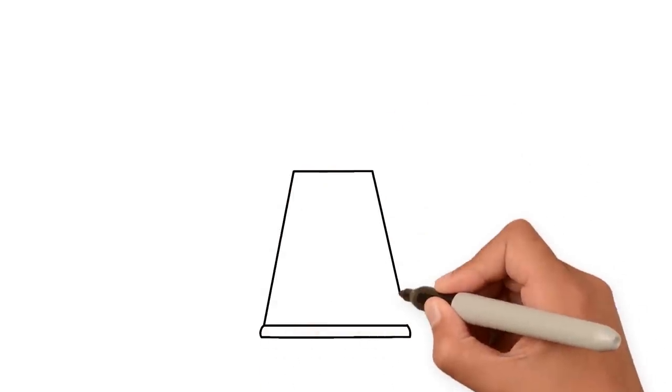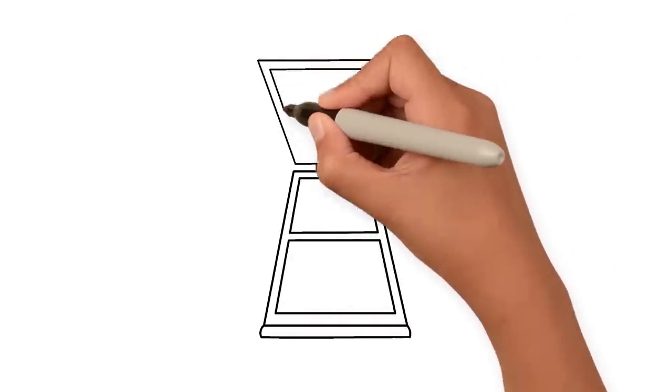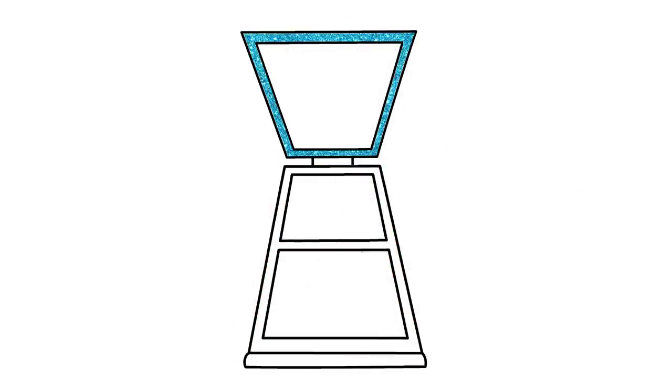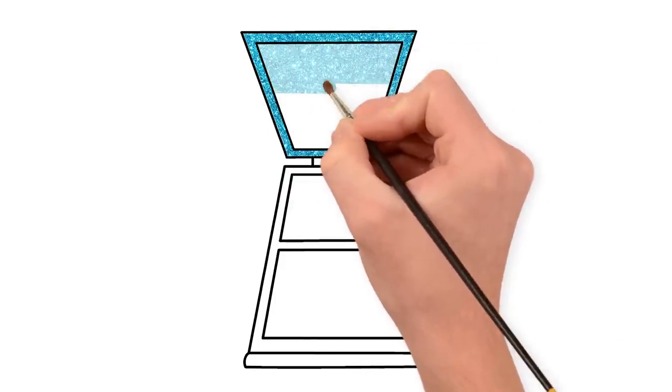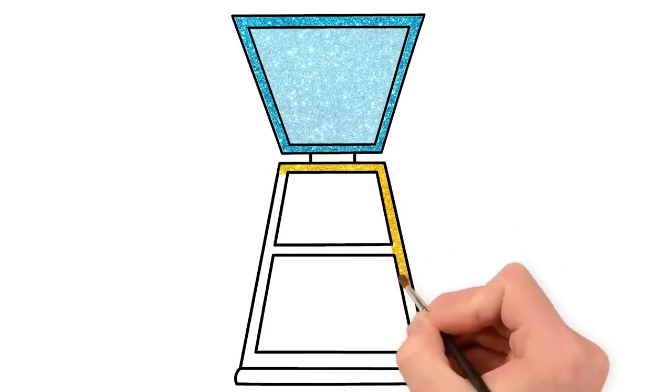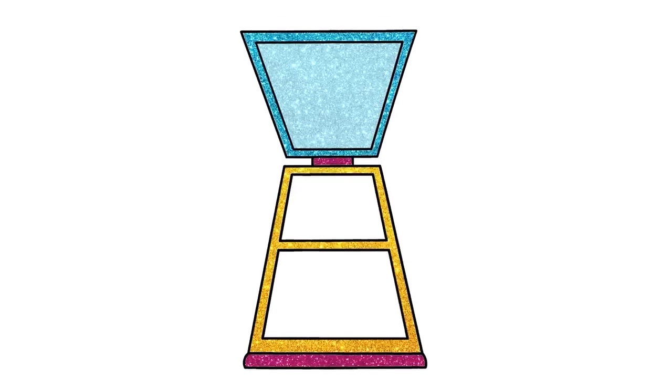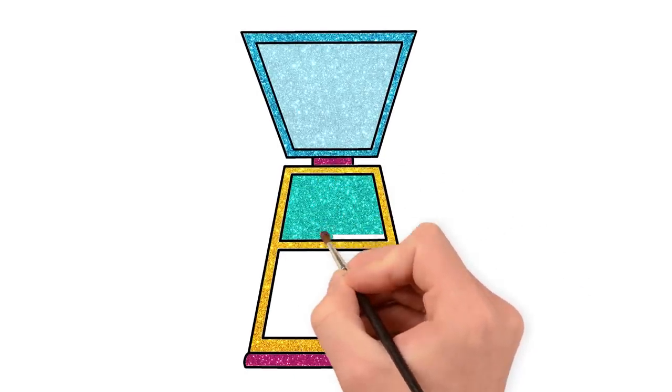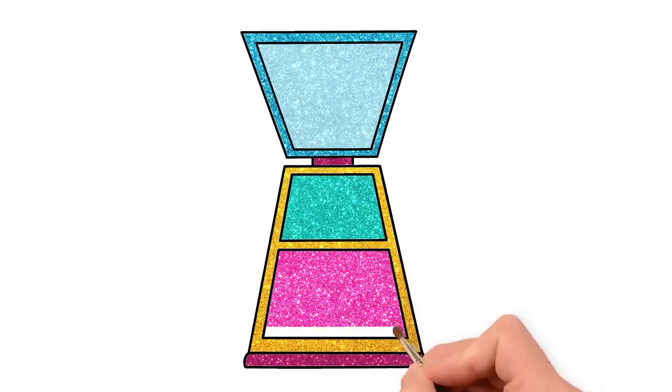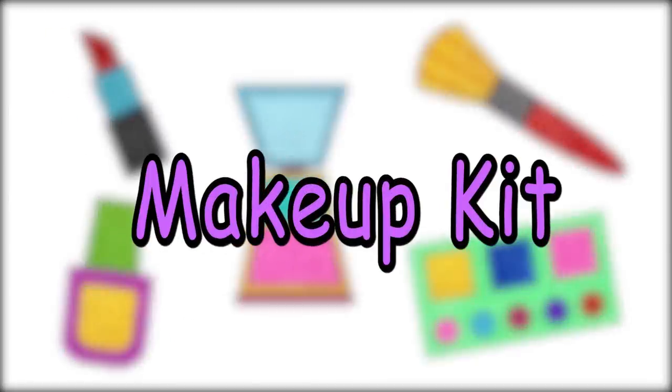We're going to need some blush too. First draw a rectangle. Now two squares within. Draw a rectangle again for the mirror. And now paint. Aqua blue. Golden. And magenta. Sea green. And pink blush shades. Here is our pretty blush. Our makeup kit is all done. Hope you had fun.